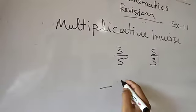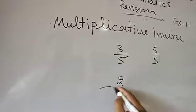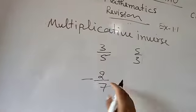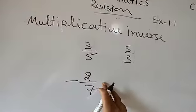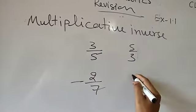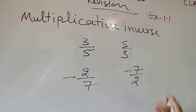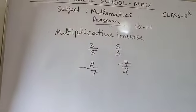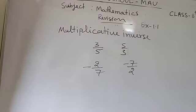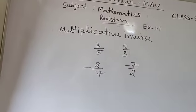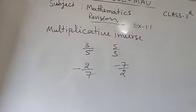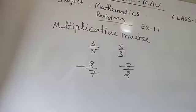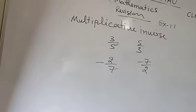If I am going to ask what is the multiplicative inverse of minus 2 by 7 — if the number is negative, its multiplicative inverse will also be negative. So its multiplicative inverse will be minus 7 by 2. Whatever the number is given, you need to only write the reciprocal of that number with the sign. If it is a positive number, its multiplicative inverse will be positive, and if it is a negative number, its multiplicative inverse will be negative.